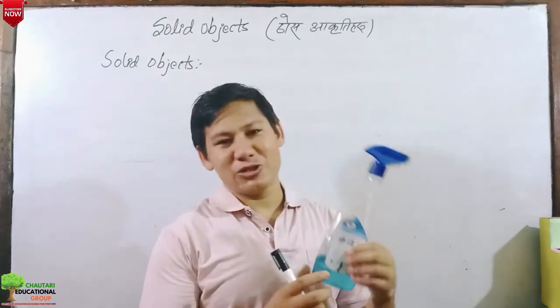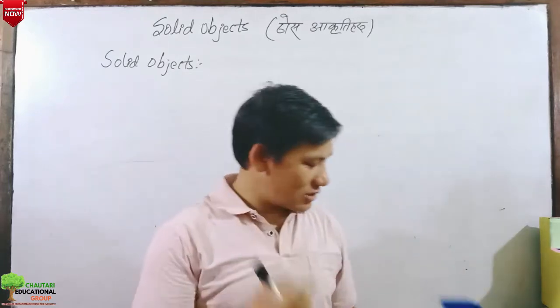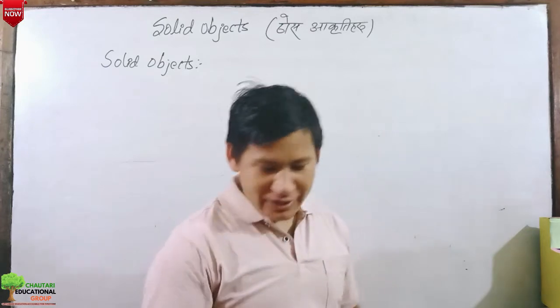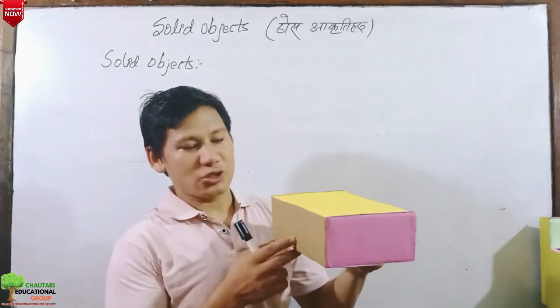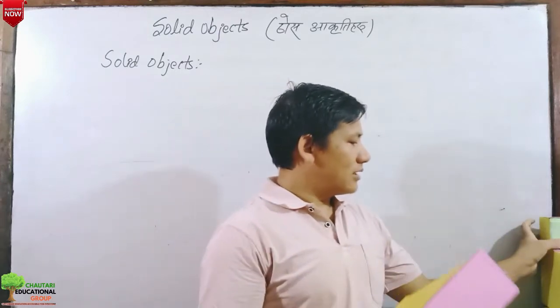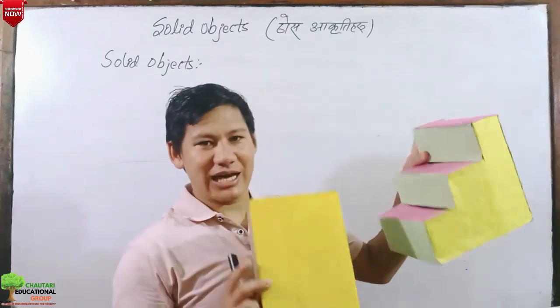For example, this is also a solid object. This is a solid object. And this is also a solid object. This is also a solid object. These are solid objects.